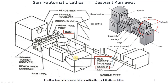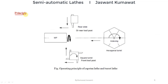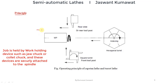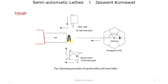We will talk about semi-automatic lathe principles later. In semi-automatic lathe, the workpiece rotates via the spindle. There is a hexagonal turret which can mount 6 cutting tools, and a front square turret which can mount 4 tools. Thank you.